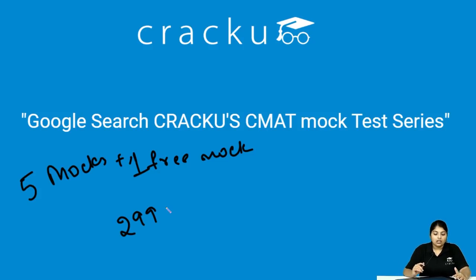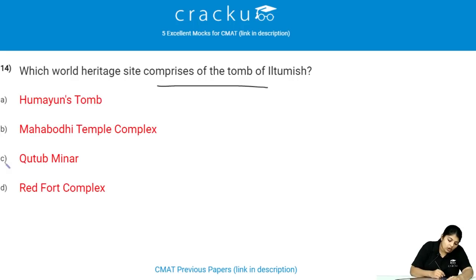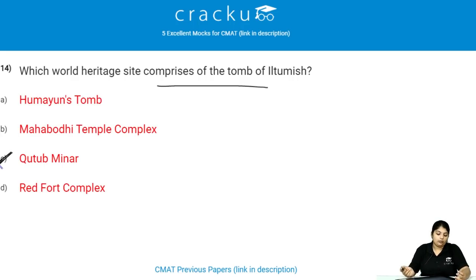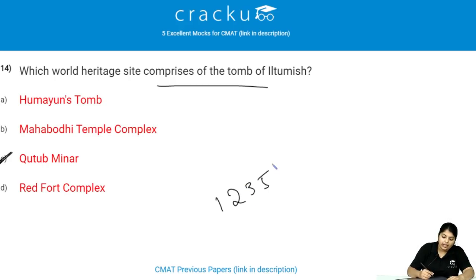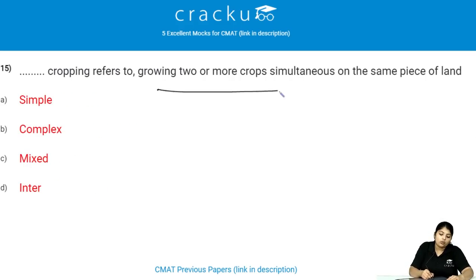Which world heritage site comprises the Tomb of Iltutmish and the Qutub Minar complex? The Qutub Minar complex comprises the Tomb of Iltutmish, which was constructed in the year 1235.